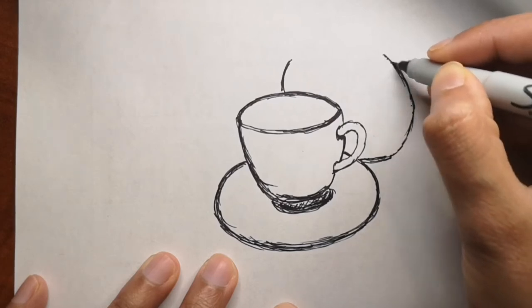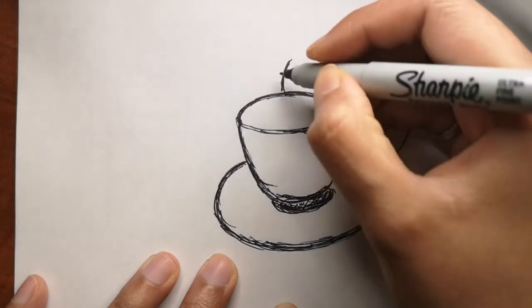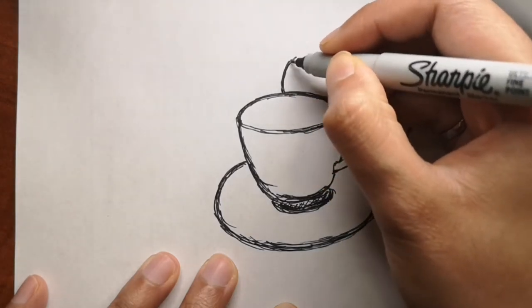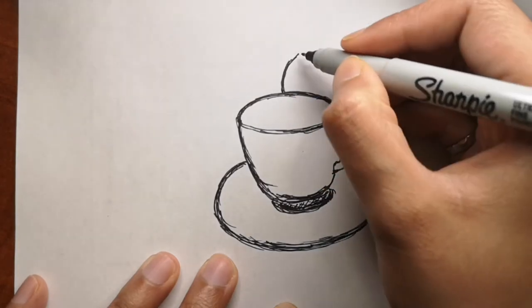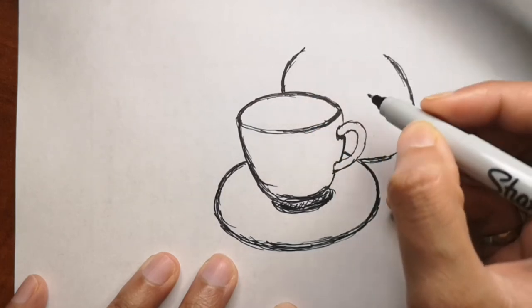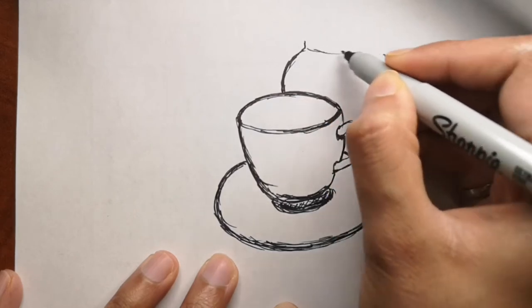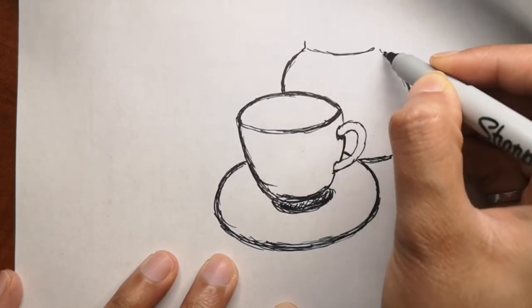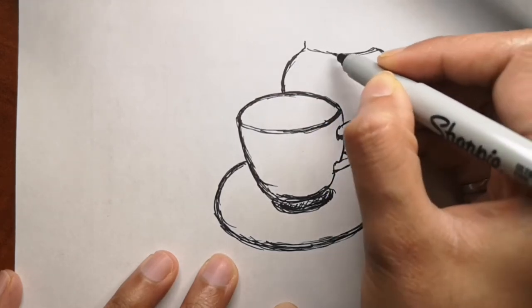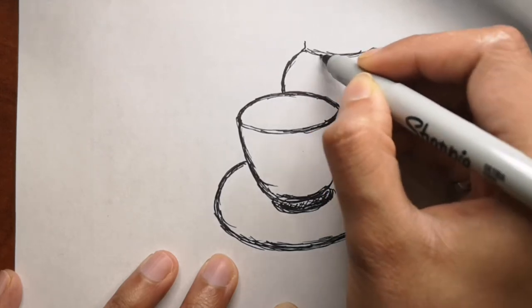Tea made using a teapot is often done by inserting dried tea leaves, or sometimes tea bags, into the pot, and boiling water is added to make the beverage.